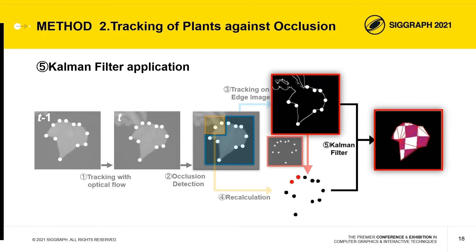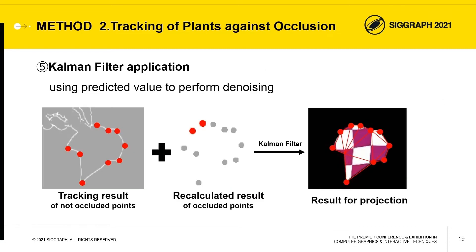The final process is application of a Kalman filter. For display purposes, a Kalman filter is applied to tracking results to perform denoising using the predicted value.